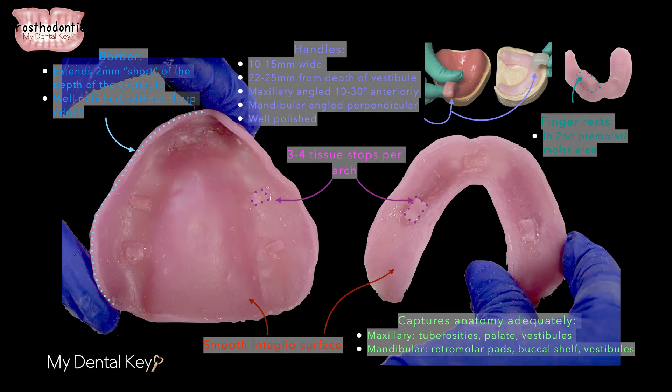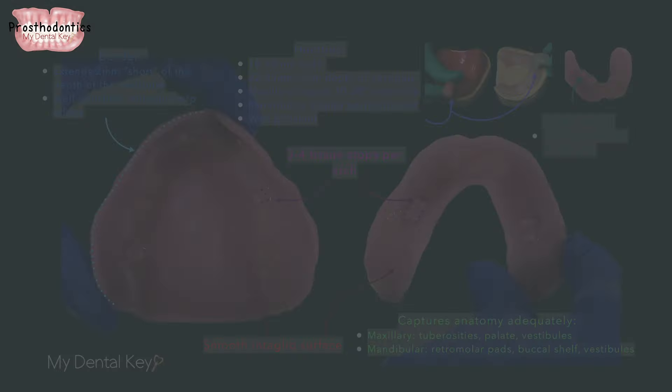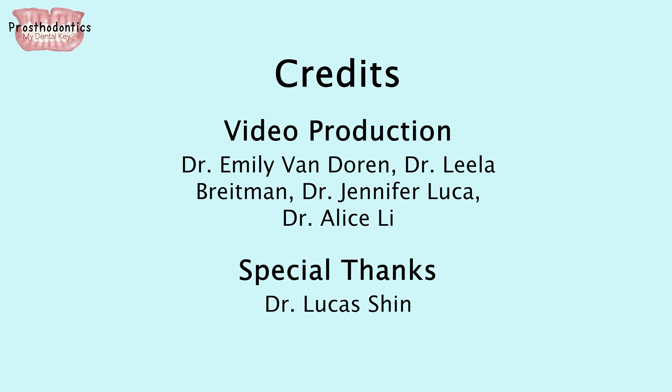Finally, you can check your custom tray against our checklist. Custom trays should be clean and neat, have smooth intaglio surfaces with no sharp tray edges, have a handle that is well polished, extend two millimeters above the depth of the vestibule, and optionally should have three to four tissue stops per arch. Thank you for learning with us, and good luck on those dentures!